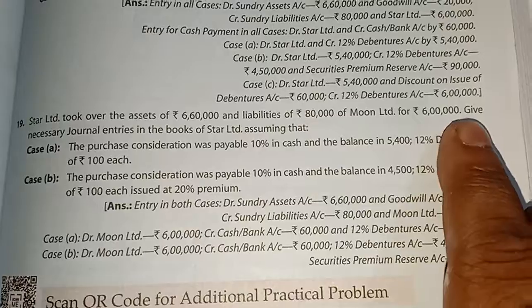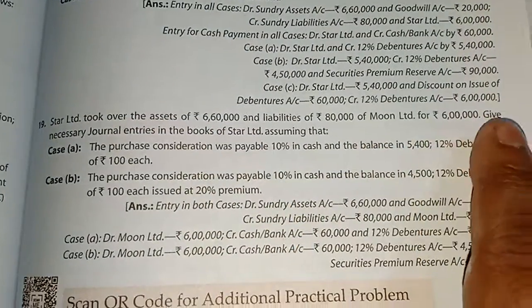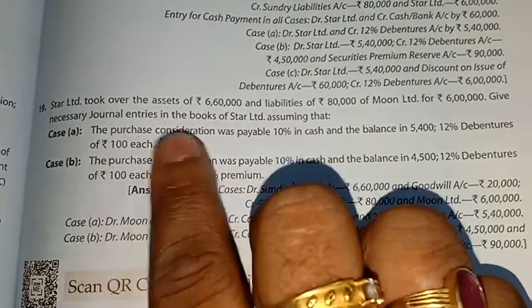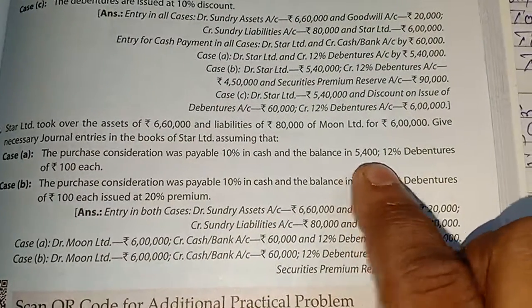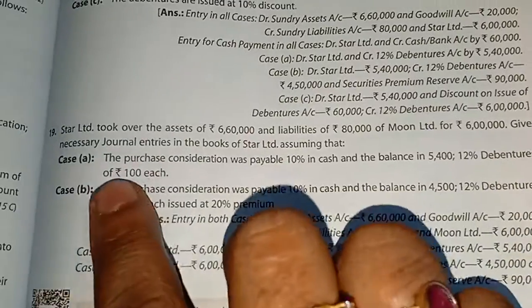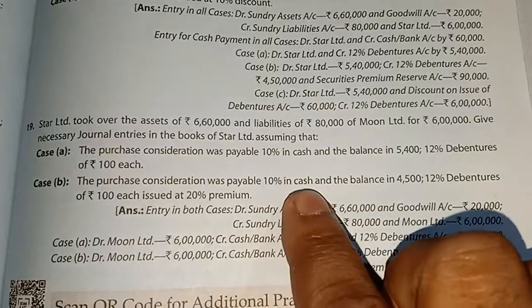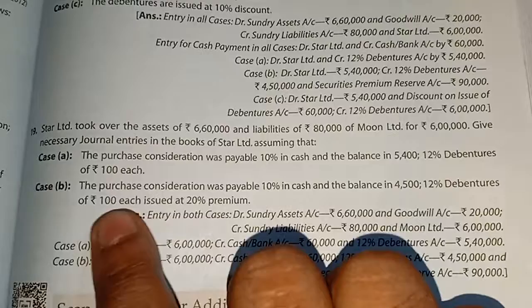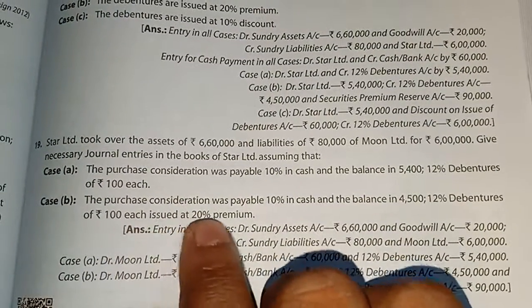According to the rule, if purchase price plus liabilities exceeds assets, the difference is called goodwill. We need to give necessary journal entries in the books of Star Limited. Case A: purchase consideration payable 10% in cash and the balance in 12% debentures of Rs. 100 each. Case B: purchase consideration payable 10% in cash and the balance in 12% debentures of Rs. 100 each, each issued at 20% premium.